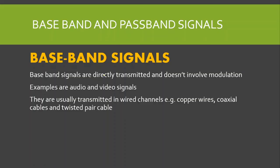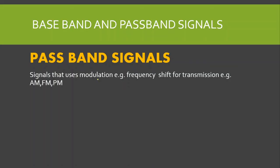Baseband signals are directly transmitted and don't involve modulation. Examples are audio and video signals, usually transmitted over wire channels such as copper wires, twisted cables, and coaxial cables. Passband signals use modulation for transmission — for example, amplitude modulation, frequency modulation, and phase modulation. All passband signals use modulation, whereas baseband signals do not. Another term for passband signals is carrier modulation or carrier communication.